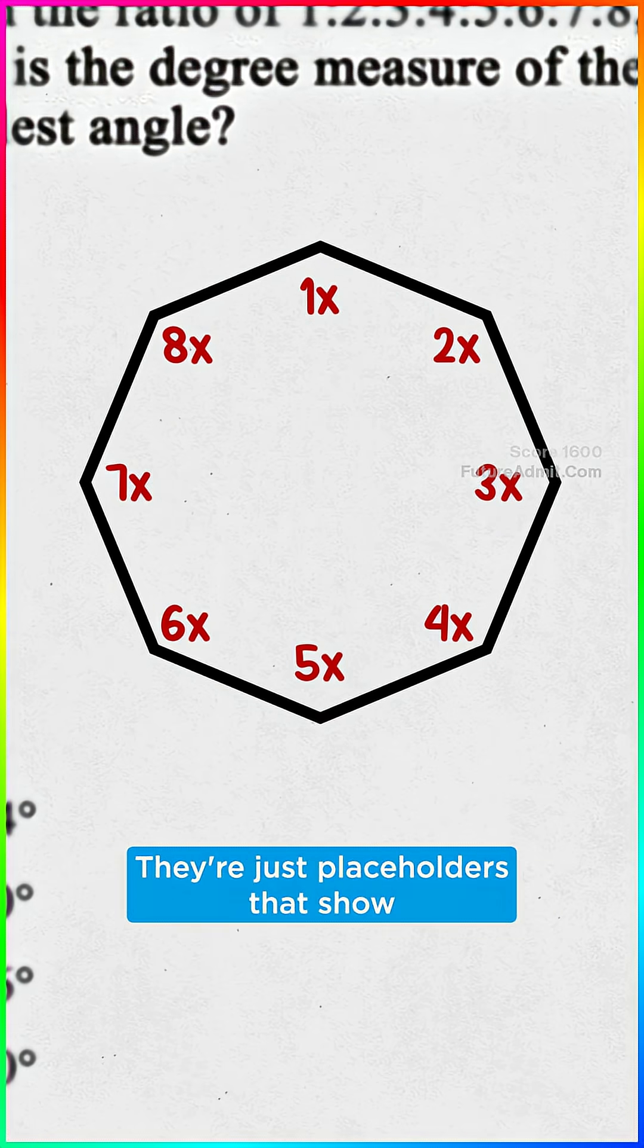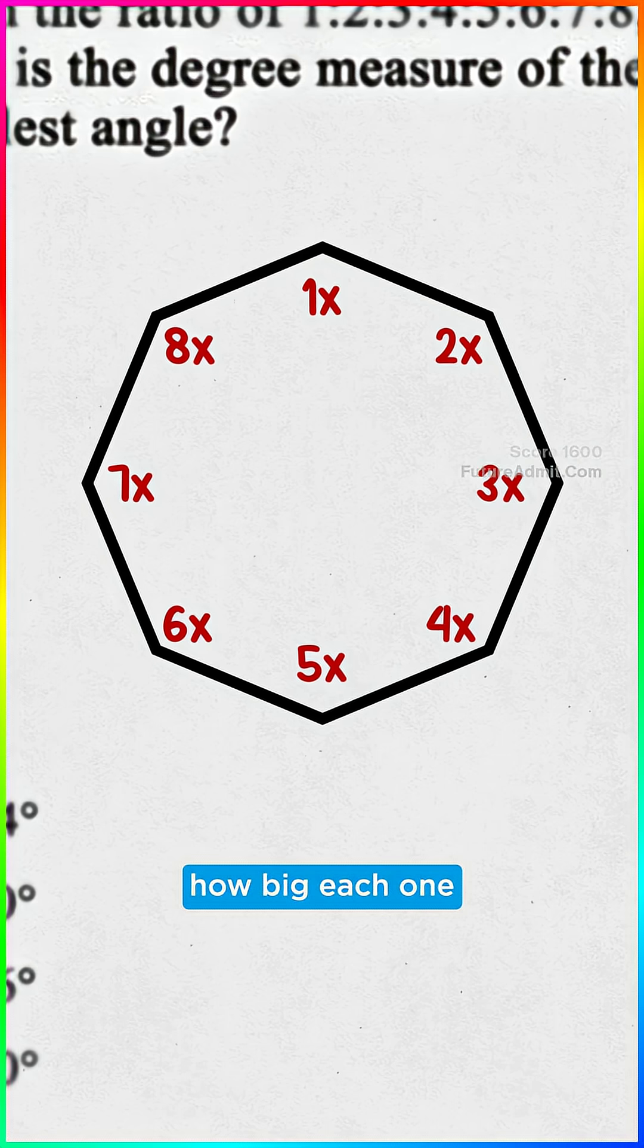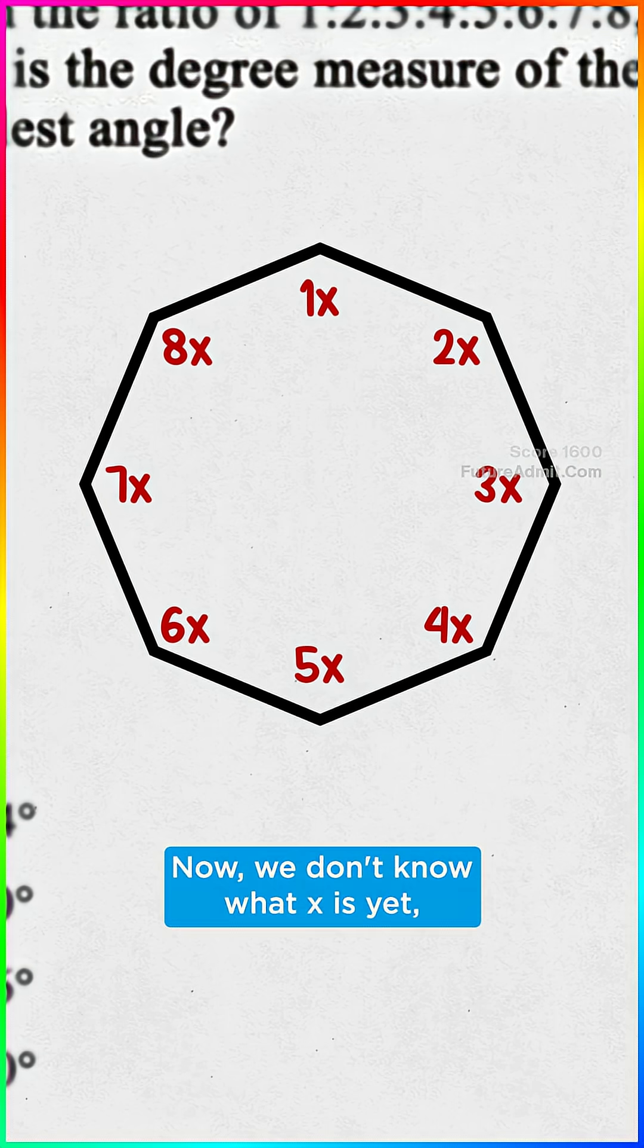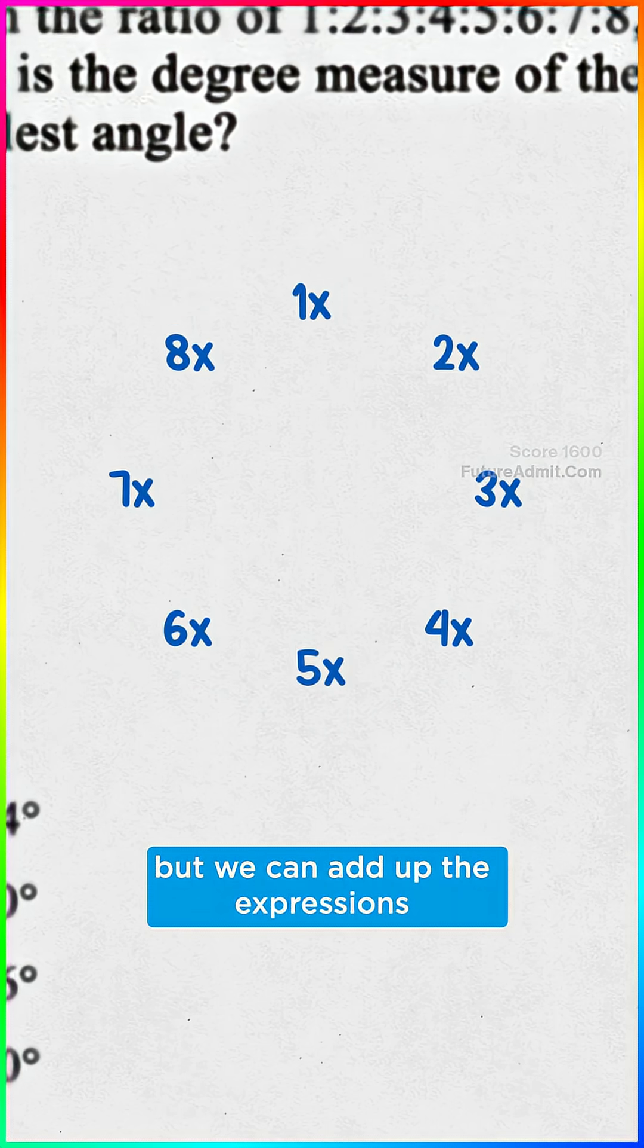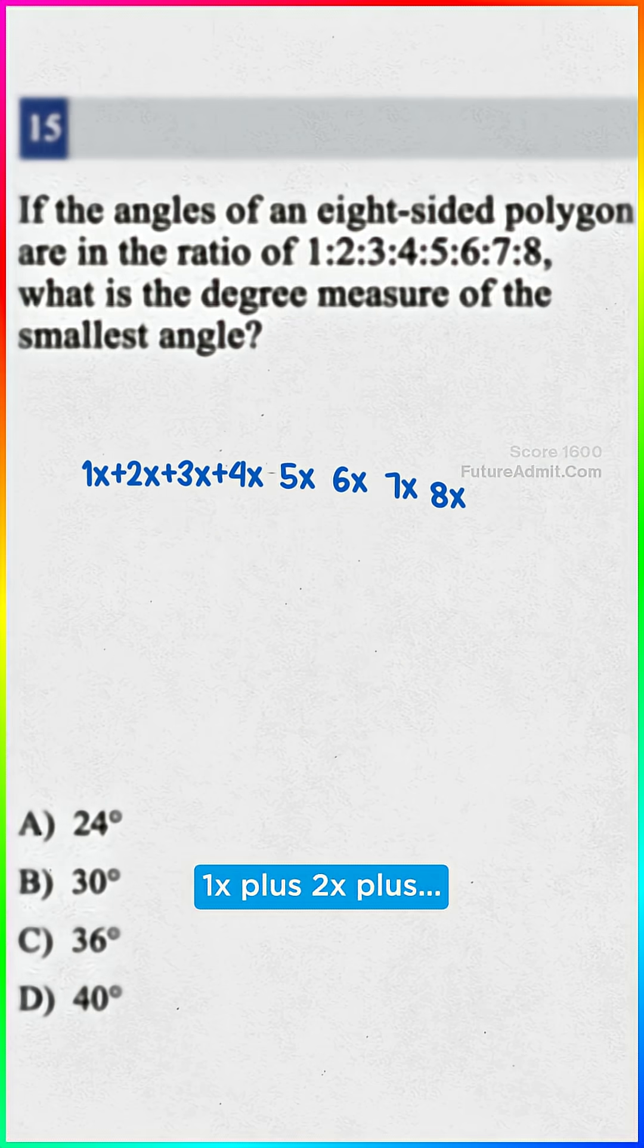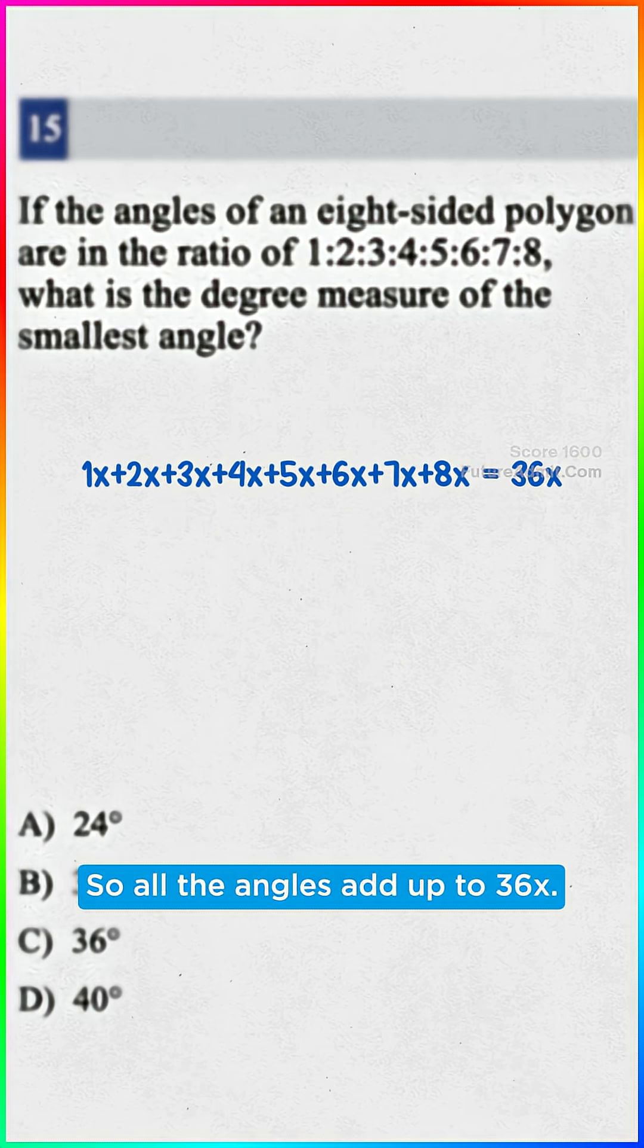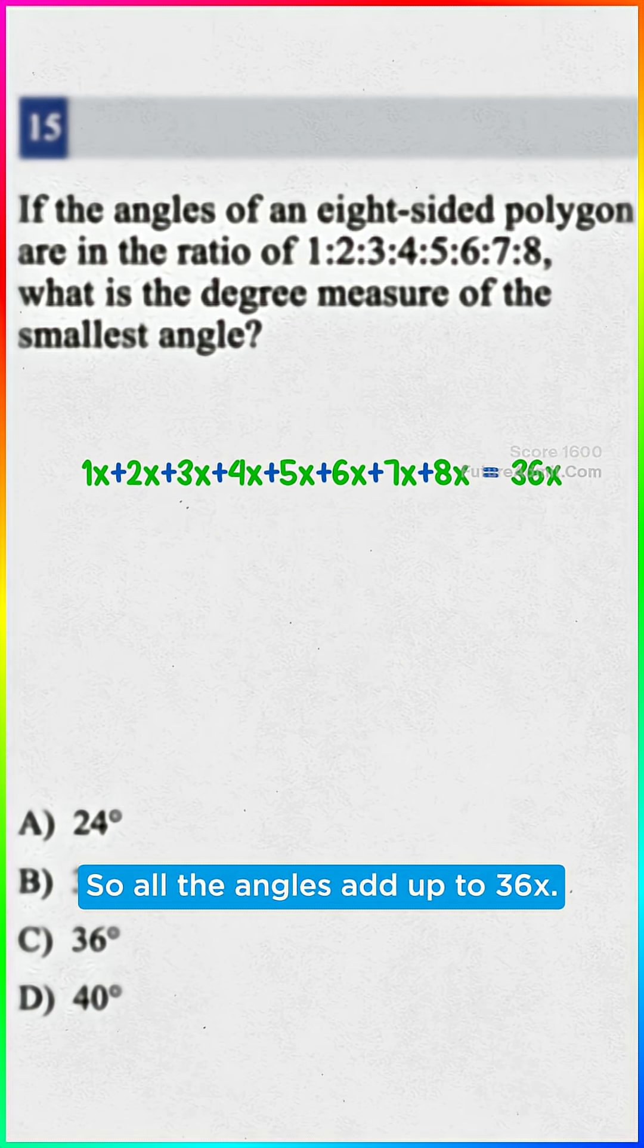But these aren't real angles yet. They're just placeholders that show how big each one is compared to the others. Now we don't know what X is yet, but we can add up the expressions. One X plus two X plus it's 36 X. So all the angles add up to 36 X.